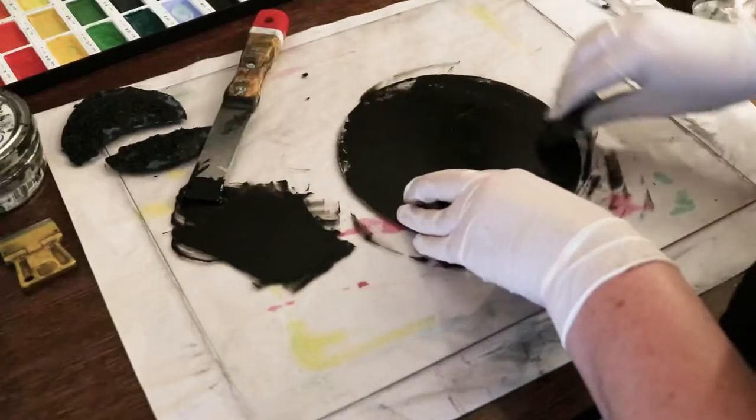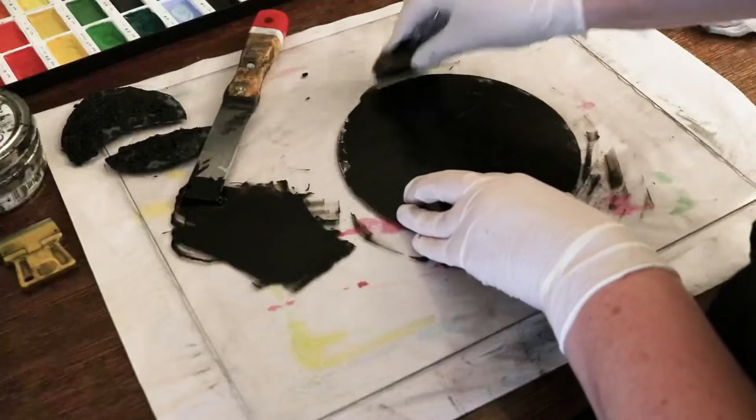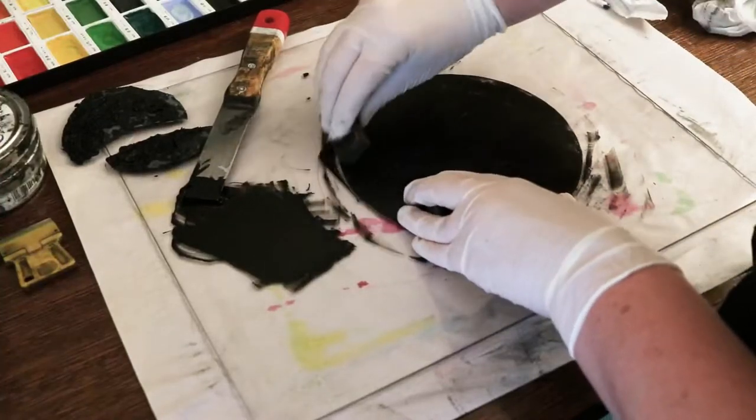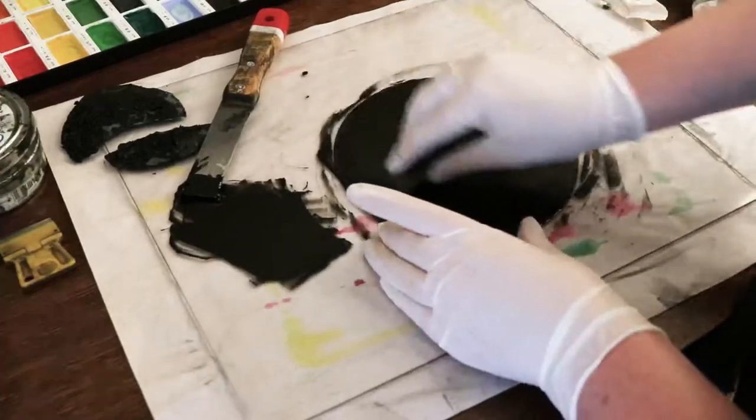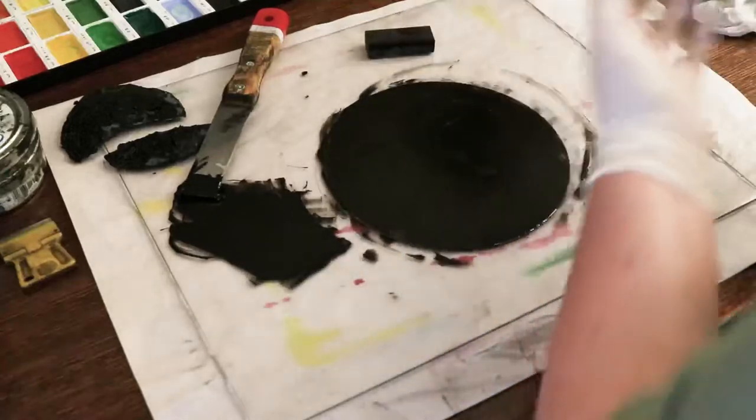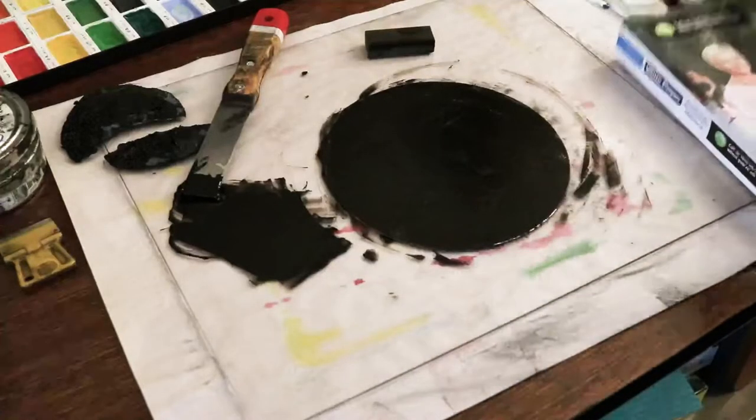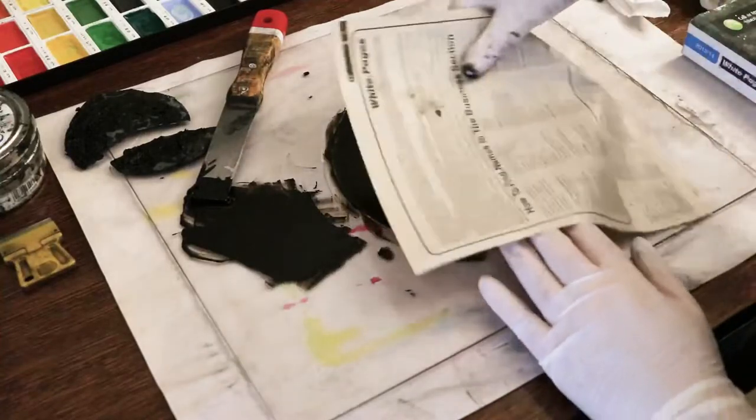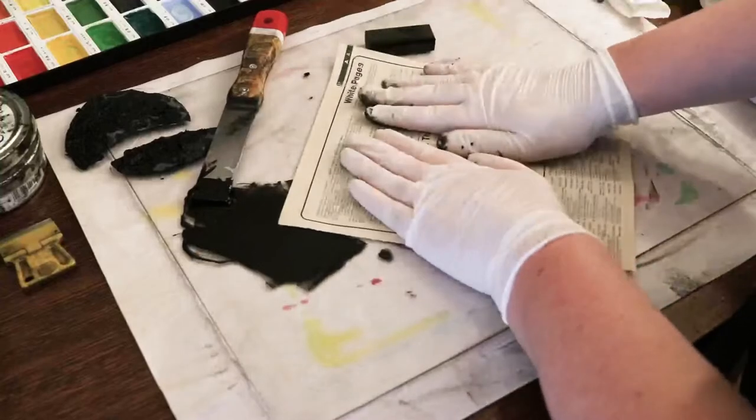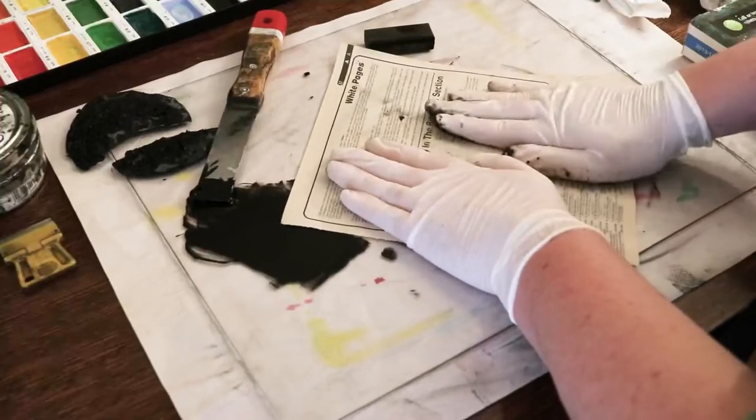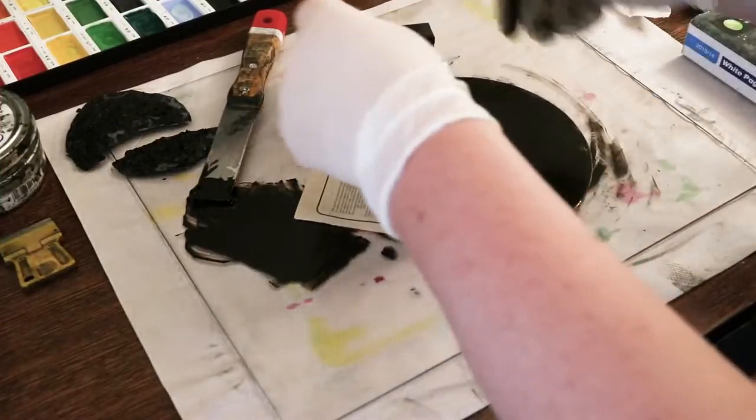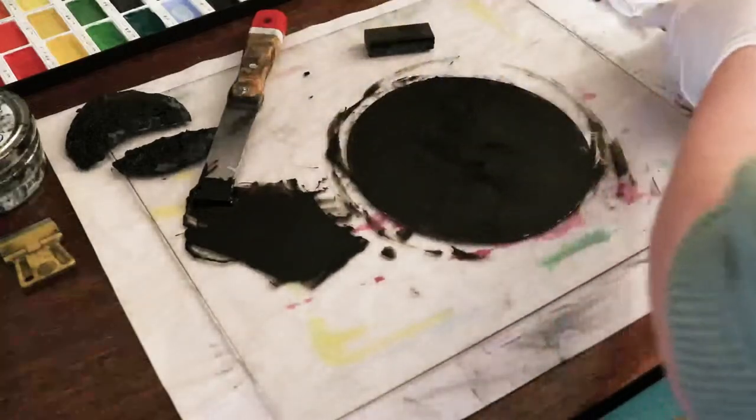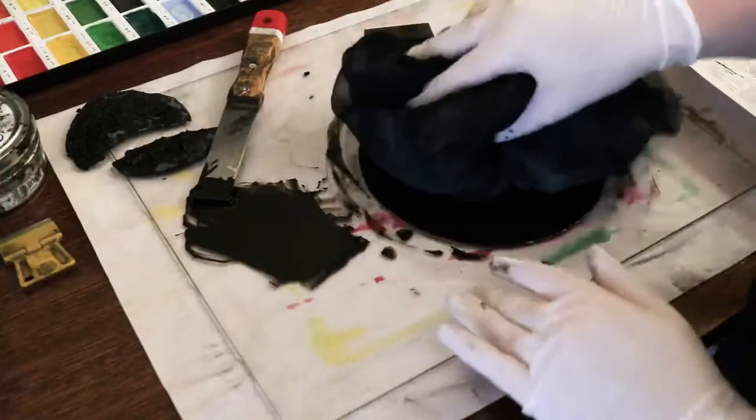The ink that I use for this print is a pretty stiff Charbonnel black ink, but you can use whatever brand of etching ink you like. The consistency of the ink will depend on the type of image that you're printing. Sometimes you'll need something looser and sometimes you'll need something that's a bit stiffer. It's good to plan a few experimental prints with a new plate to see what will work best for you on that day, and you can always add different modifiers to your ink to make it the right consistency.